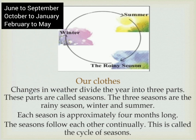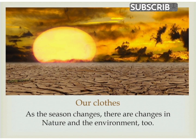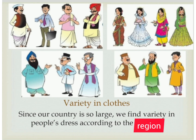Each season is approximately four months long. The seasons follow each other continually — this is called the cycle of seasons. As the season changes, there are changes in nature and the environment too.